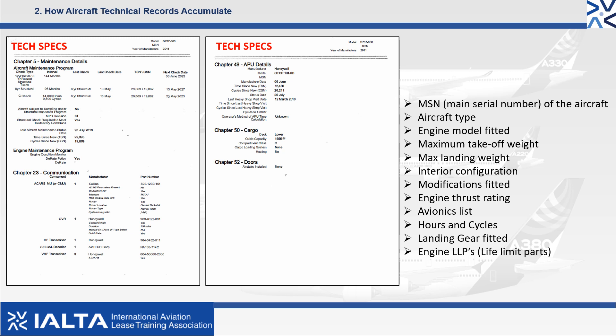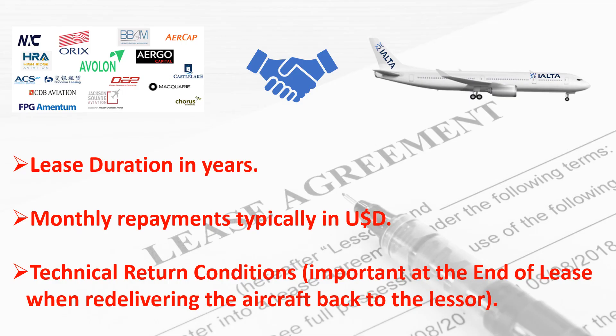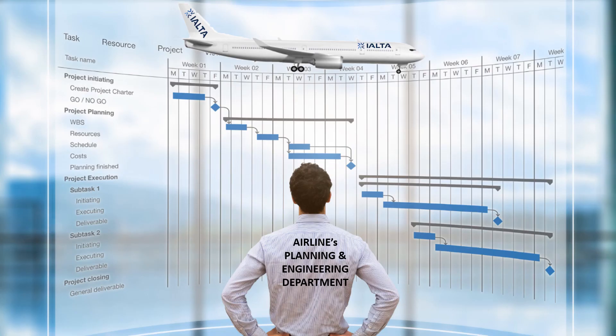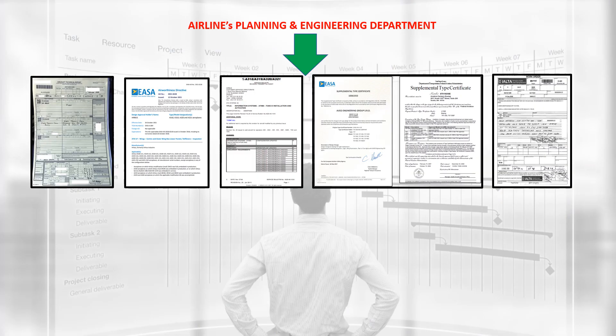That's a lot to take in, but don't worry. We will explain some of these terms later and in other videos. The lessor then agrees a lease contract with the airline. This contract will identify the lease duration, the monthly payments and the technical redelivery conditions. The airline planning and engineering department are responsible for the airworthiness of the aircraft and will monitor and control this by means of technical records.